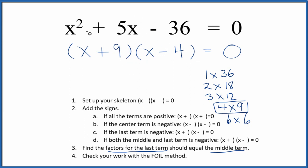And we've correctly factored the equation x squared plus 5x minus 36. But we should check our work with the FOIL method just to make sure we got it right.